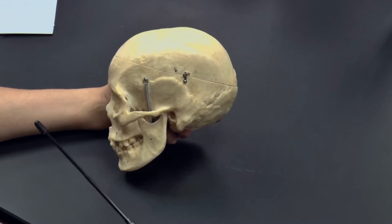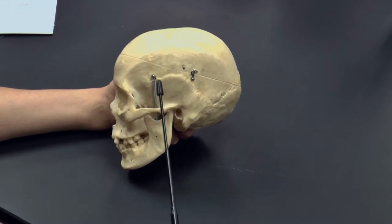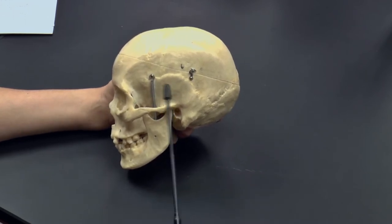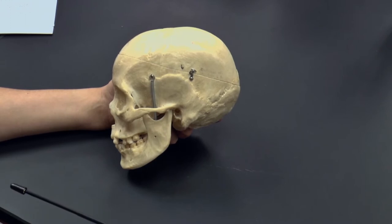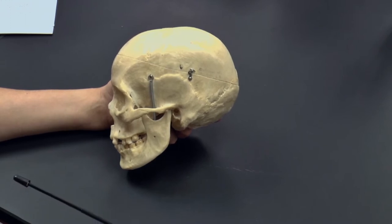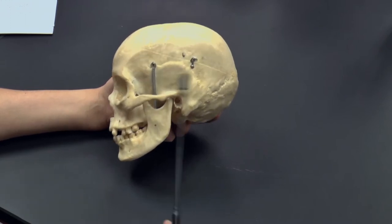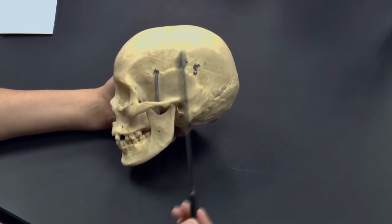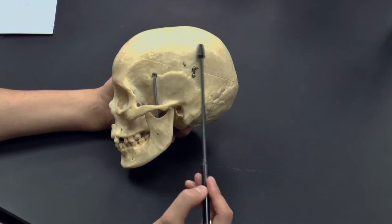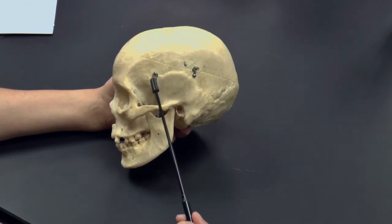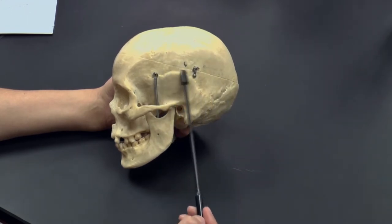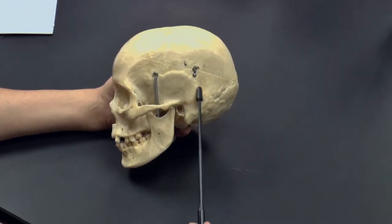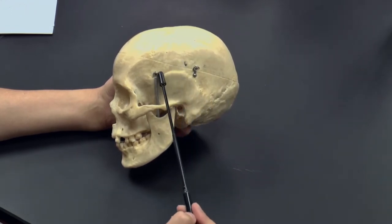From this view we can also see several sutures, which are the joints that attach the bones of the skull together. Here's the temporal bone and the parietal bone, and this suture is called the squamous suture.